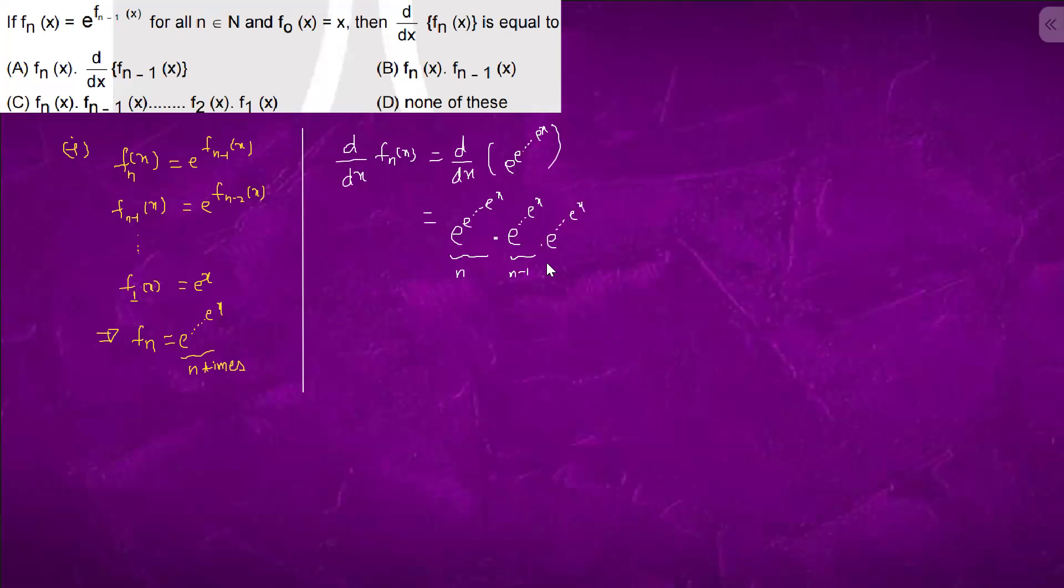We are left with this term n minus 2 times, similarly it will keep on going 2 times e to the power e to the power x.